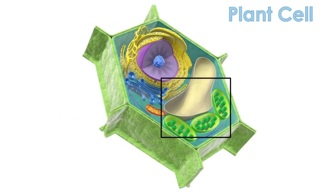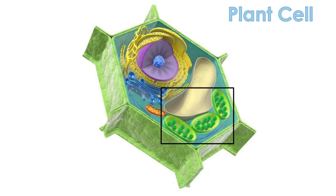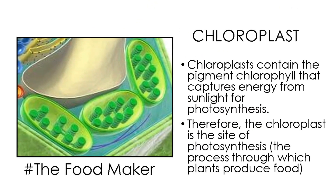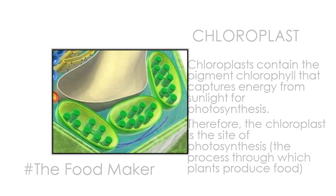Chloroplasts contain the pigment chlorophyll that captures energy from sunlight for photosynthesis. Therefore, the chloroplast is the site of photosynthesis — the process through which plants produce food. Animal cells have no chloroplasts. Thus, animals cannot make their own food.